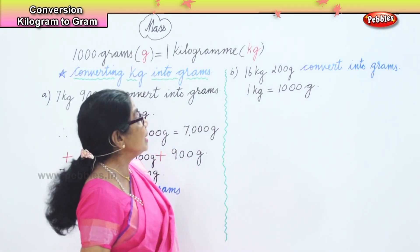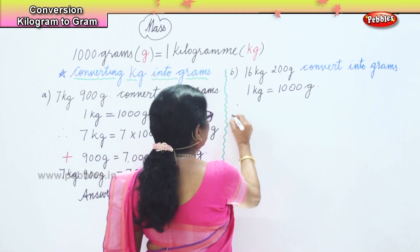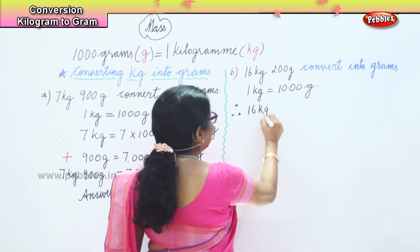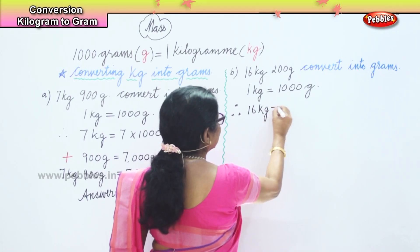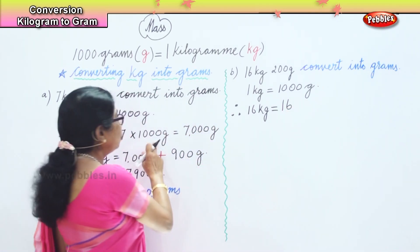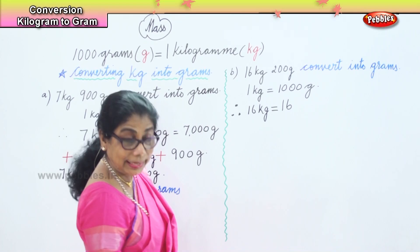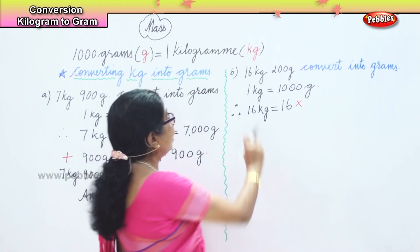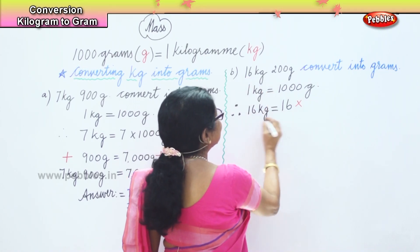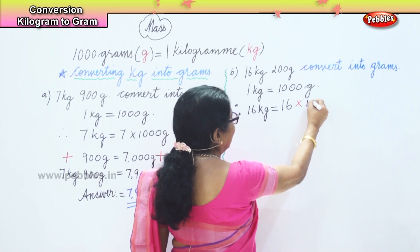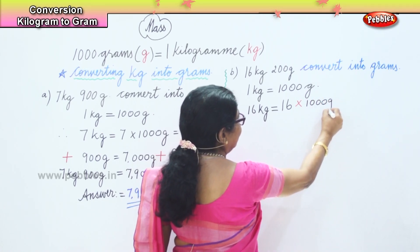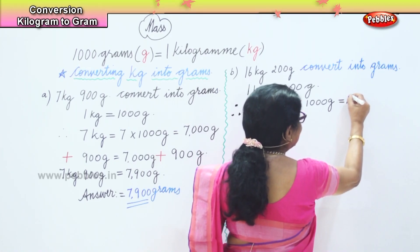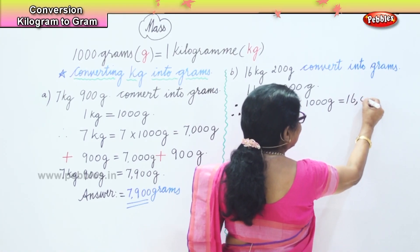Therefore, 16 kg is equal to 16 into 1000, which gives us 16,000 grams. So 1 kg equals 1000 grams, and 16 kg equals 16,000 grams.